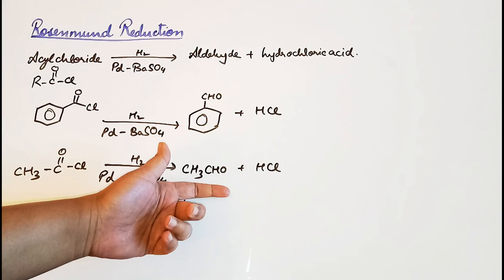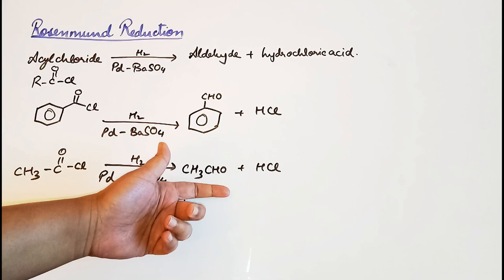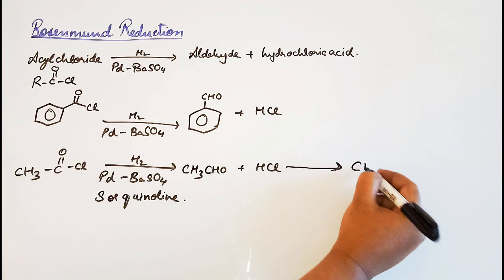These poisons in this case are sulfur or quinoline, and these prevent the over-reduction of the aldehyde to give us a primary alcohol. So we don't want this reaction to proceed and for us to get CH3CH2OH.